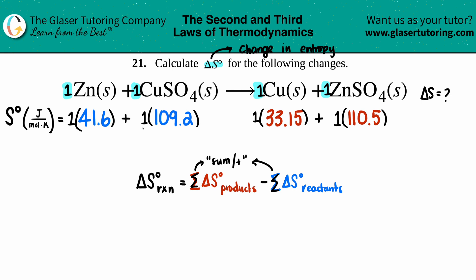33.15 plus 110.5 - the whole is 143.65. And now here are your two values that are going to be used now for our balanced equation.